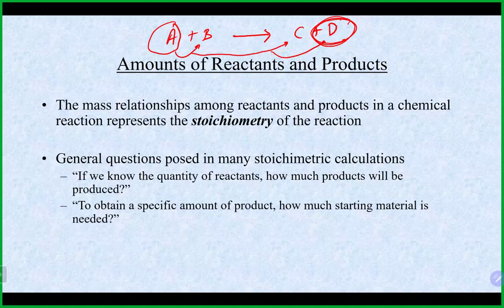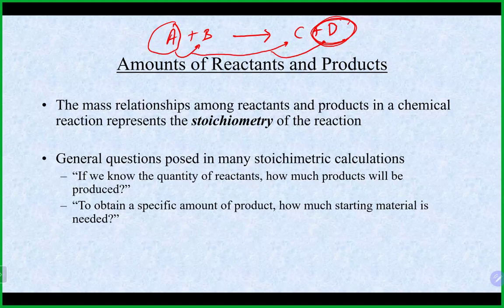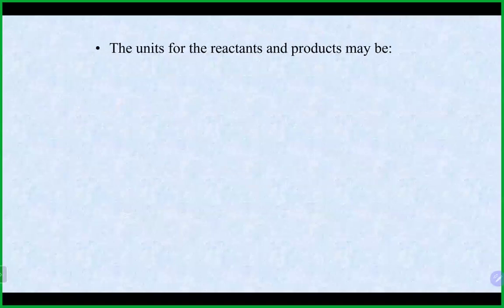Stoichiometry is nothing more than really a conversion factor. Instead of going to a table to see that 12 inches equals a foot, where you get your conversion factor from is the actual balanced equation — and that is why the equation always needs to be balanced. In most stoichiometry problems, you're given information about somebody in the equation that you're really not interested in, so you need a way to convert from that to the one you are interested in.